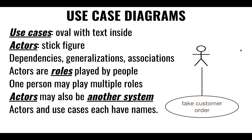Just like if you are in the movies domain, a domain object might be a movie, a movie ticket, or a reservation. Those would be domain objects specific to the movies domain. Similarly, a customer order is relevant to the coffee shop domain.